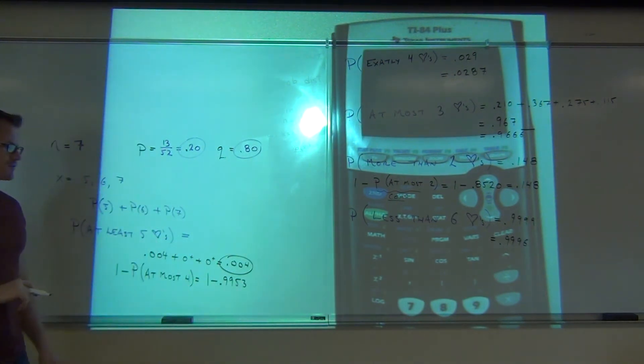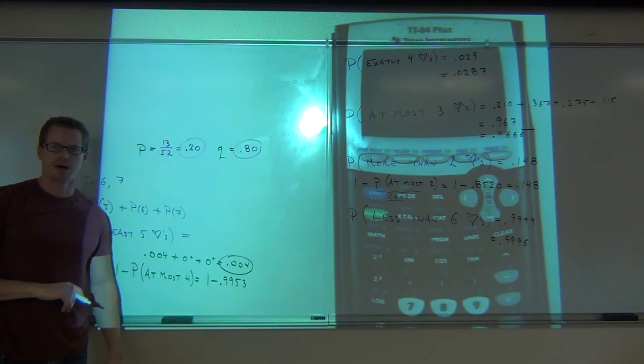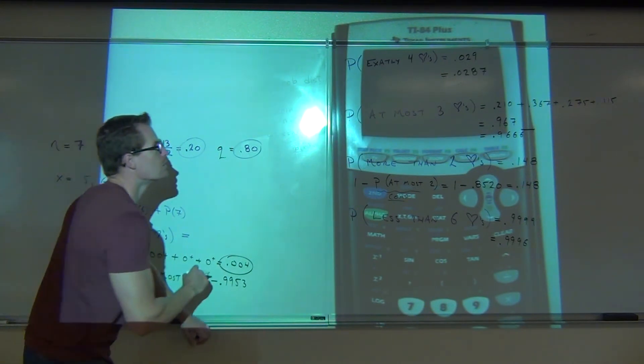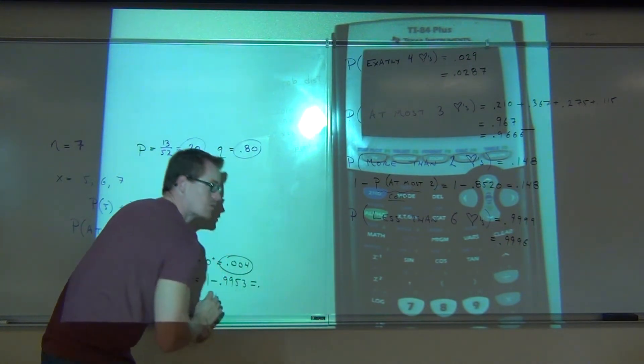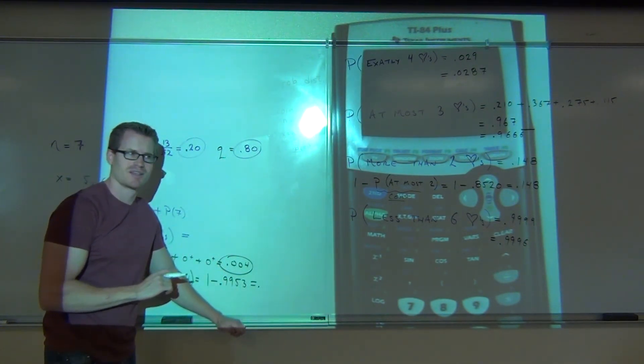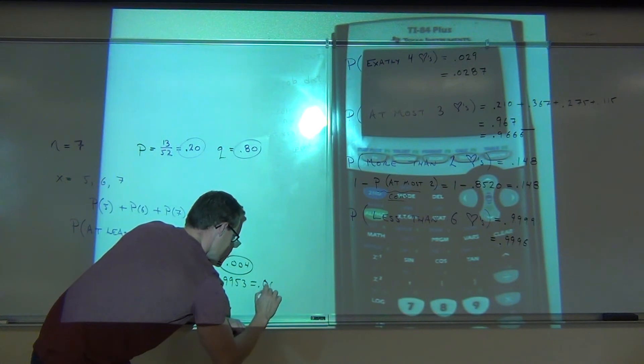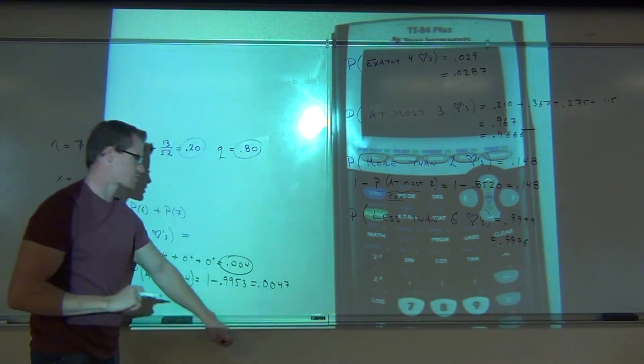Point nine nine five three. Can you tell me what is one minus point nine nine five three please? Point zero zero four seven.